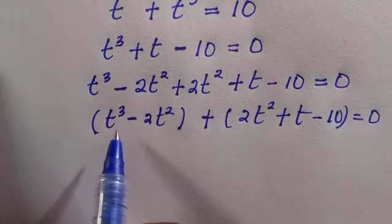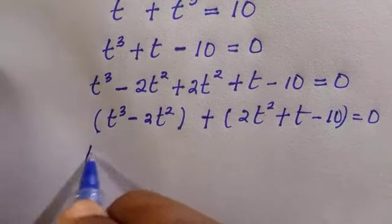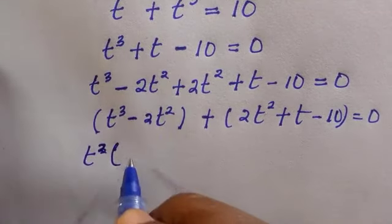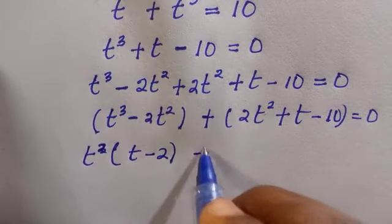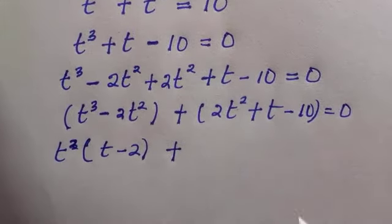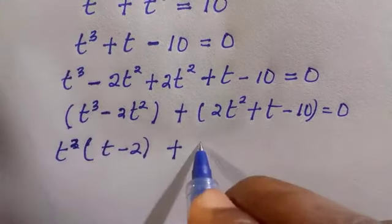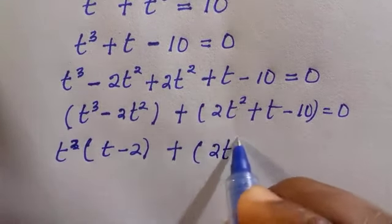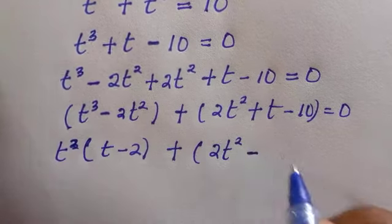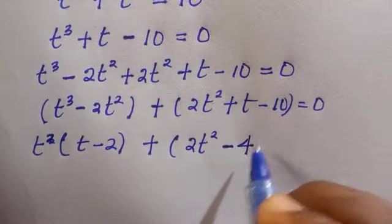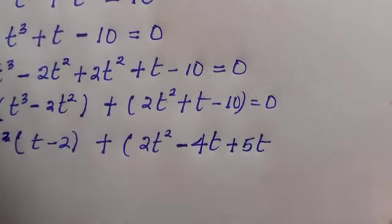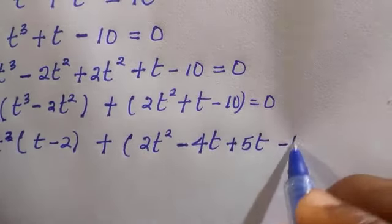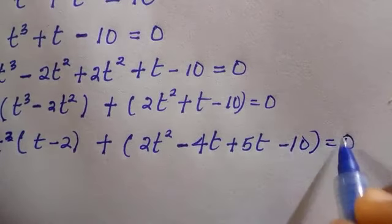When getting this, you know what is common here is t raised to power 2. By taking it out we are left with t minus 2 plus, well for the other part, you know this is a quadratic equation which you can have it as 2t squared and the middle term can become minus 4t plus 5t minus 10 equals 0.